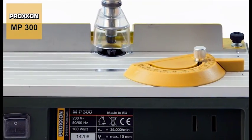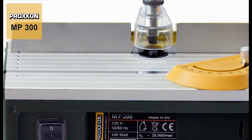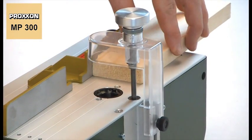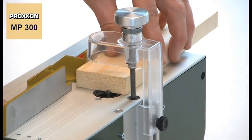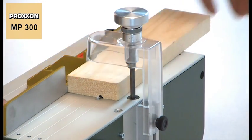The scope of delivery includes a practical angle stop and a longitudinal stop made of polished aluminum. These elements have a wide adjustment range, allowing accurate and perfectly straight machining of workpieces of diverse widths.